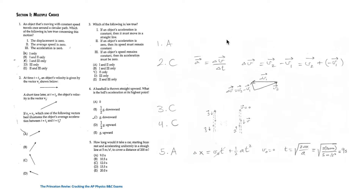The answer is A, which is one only — only the displacement is zero, because the initial position and final positions are the same. But the average speed, which is the total distance traveled over time, is not zero, because the total distance is the circumference of the circle.